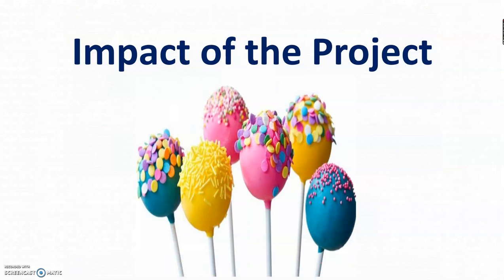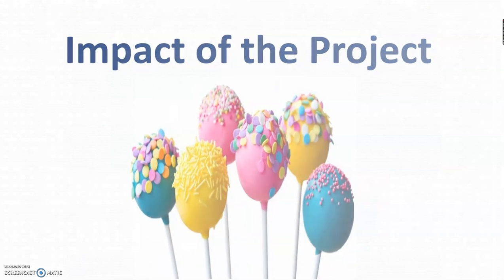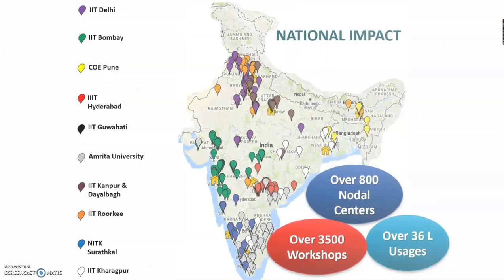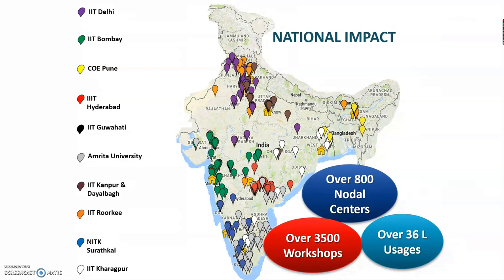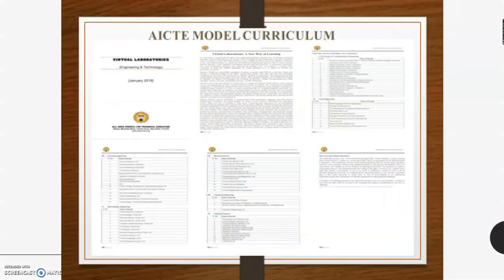This is the impact of the project. There are more than 800 nodal centers, and you can see the national impact stats right in front of you. Even AICTE has added virtual labs in the model curriculum.